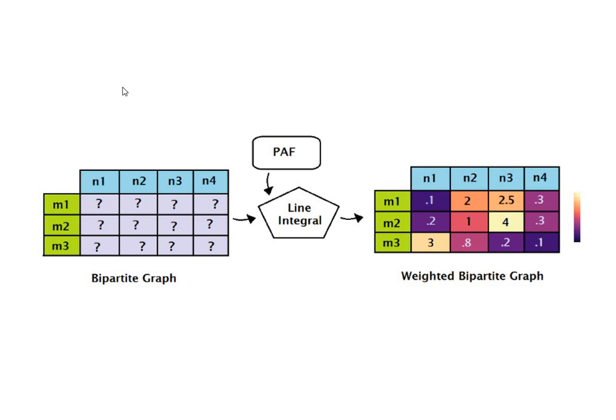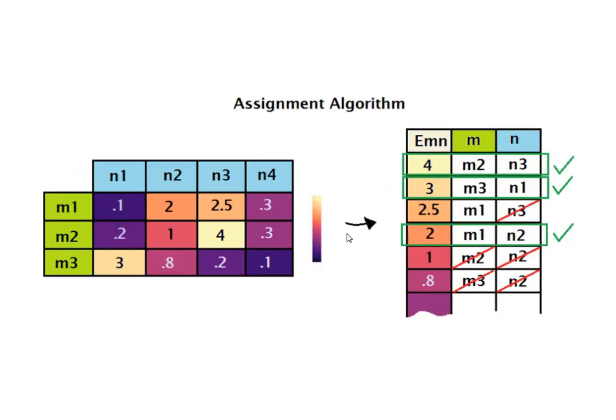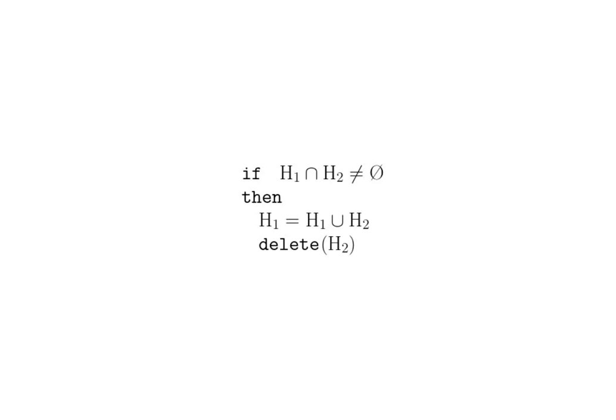We use the pair with the strongest bond and eliminate the others. In the end we get only the weighted bipartite graph showing all possible connections between candidates of two different parts. Using the PAFs with the line integral, we get a score for each connection. We sort these scores from maximum to minimum and apply a greedy approach to find the maximum for each pair, until we have all the different pairs that can be combined to create the human skeleton.